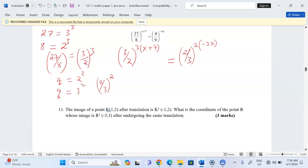For example, this is 3 out of 2 raised to 3x plus 21. This is 2 out of 3 raised to negative 6x.